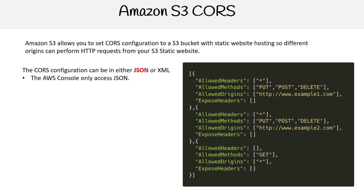The CORS configuration file can be in either JSON or XML. In the AWS console, it only shows JSON now. The XML option used to be in the console, but they got rid of it. It was suggested you could still set it, but when you look, it's only showing JSON options.